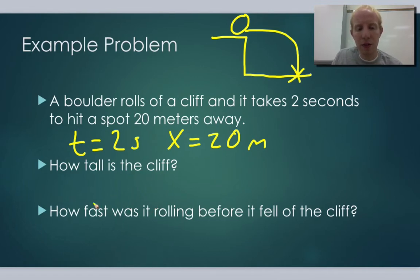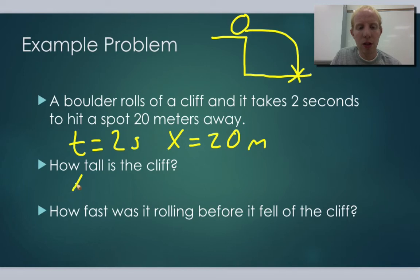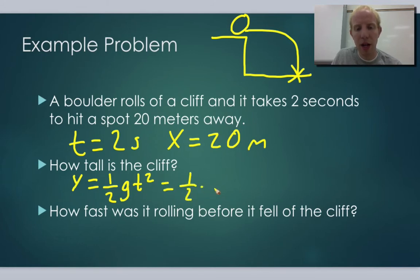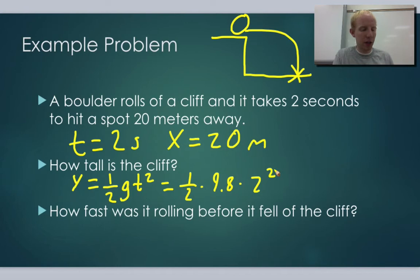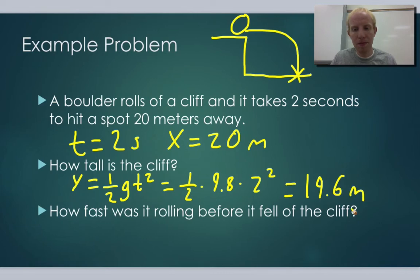How tall is the cliff? We want to use the y direction equation: y equals one-half g t squared. We do know the time, so we can plug everything in: one-half times 9.8 times 2 squared. We get that the cliff is 19.6 meters tall. That's our y position — how tall the cliff was that the boulder started on.